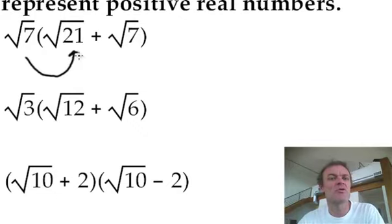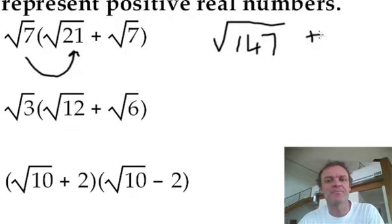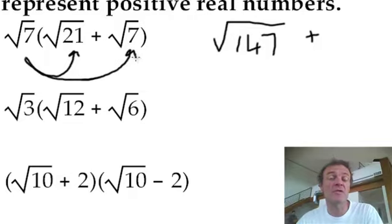What's root 7 times root 21? Root 147. Plus, what's root 7 times root 7? Now remember this one, this is a shortcut. Root 7 times root 7 is just 7.